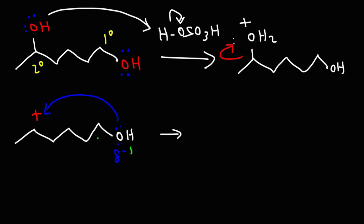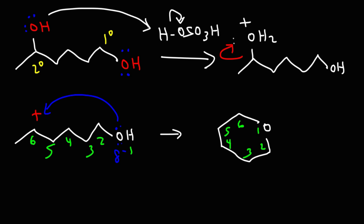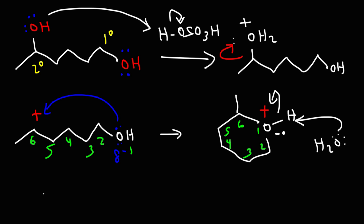We're going to get a six-membered ring with oxygen being part of that ring — counting carbons 1 through 6, we still have the methyl group on carbon 6, and the last thing we need to do is remove the hydrogen on the oxygen using water. Thus, for this particular reaction, instead of getting an elimination reaction, we get a cyclic ether. This is more of an SN1 reaction: the leaving group leaves, we get a secondary carbocation, and then the nucleophile attacks giving us the product.